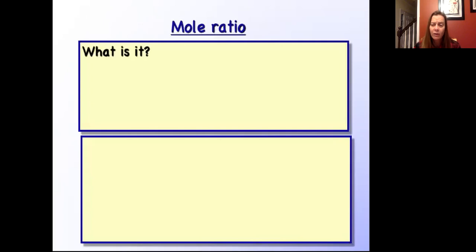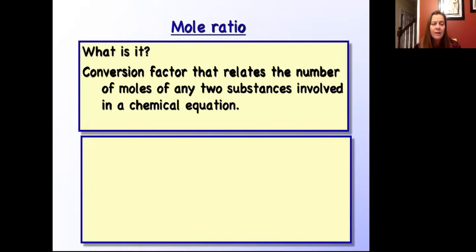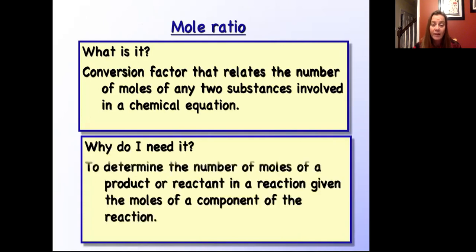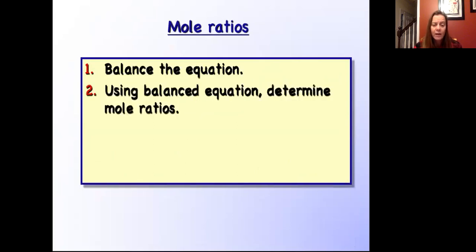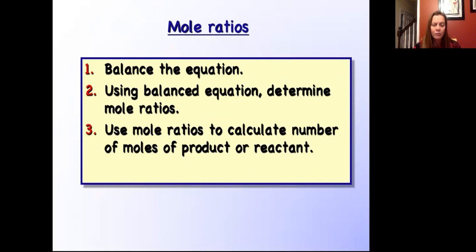We can use those coefficients to write what's called the mole ratio, which we've spent an entire day building. The mole ratio is a conversion factor that relates the number of moles of any two substances involved in a chemical equation. We need it to determine the number of moles of a product or reactant given the moles of any other component. The mole ratio works whether the information given is about a reactant or a product. We always balance our equation first, then use it to determine mole ratios, and then calculate the number of moles of product or reactant.